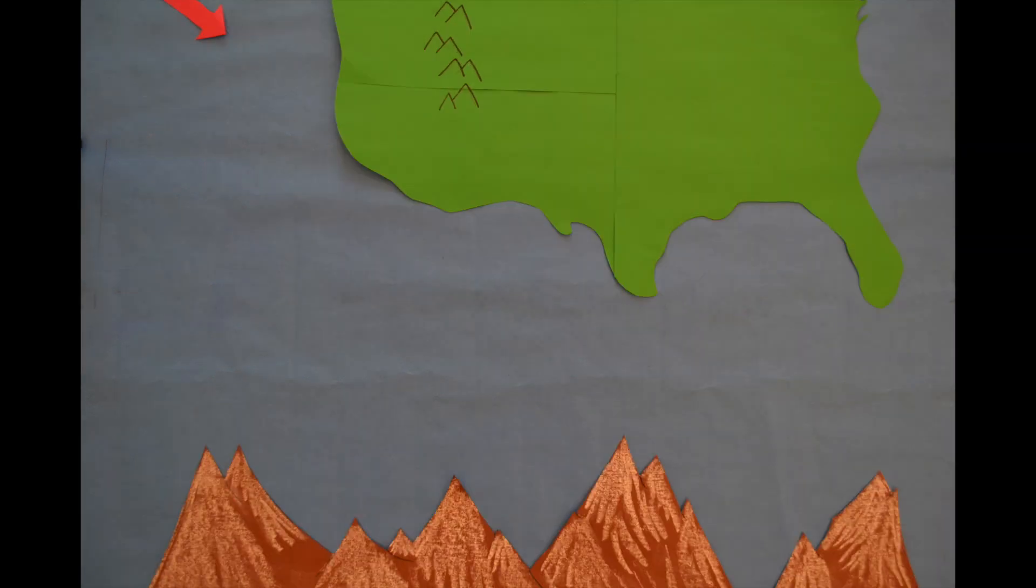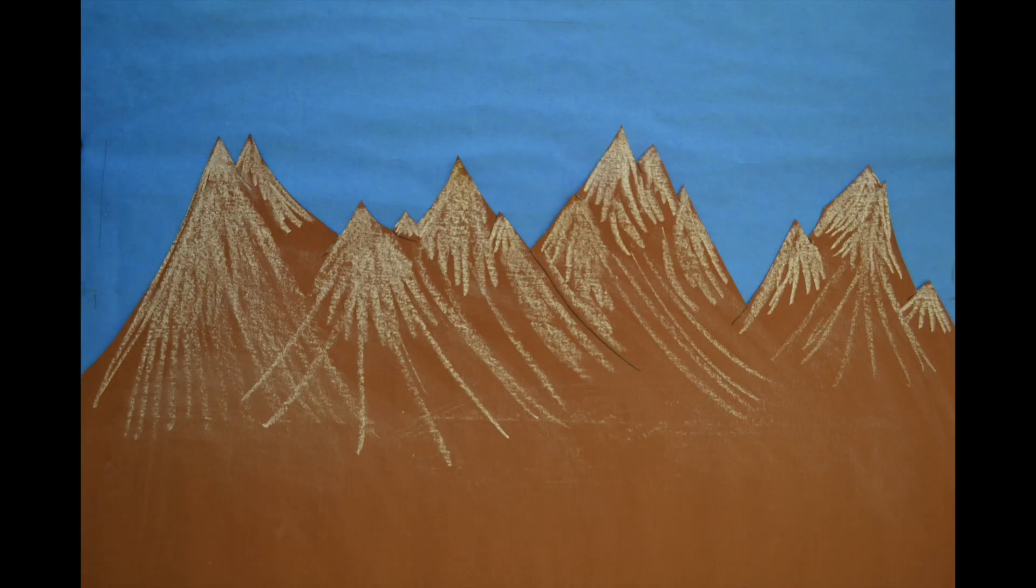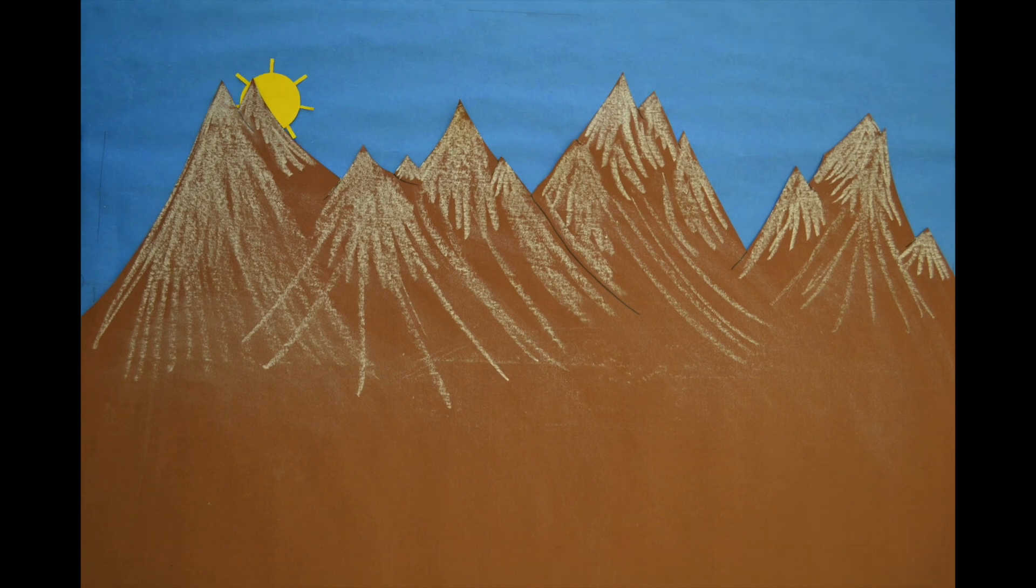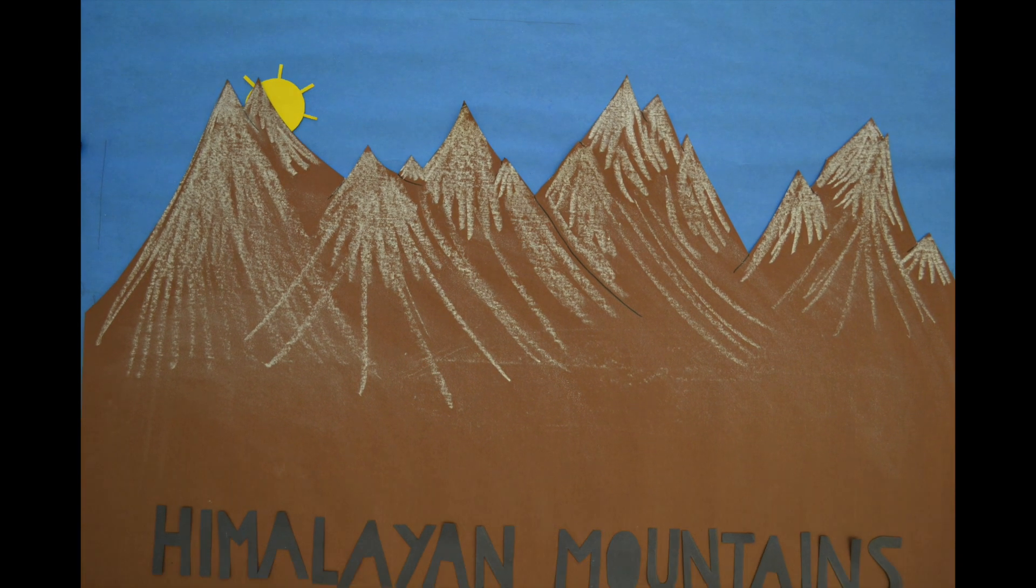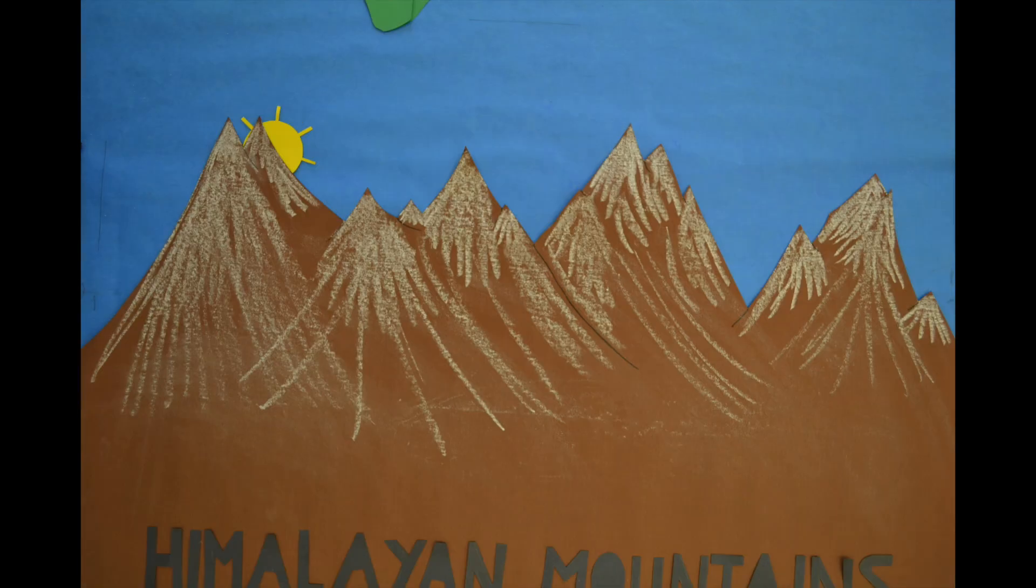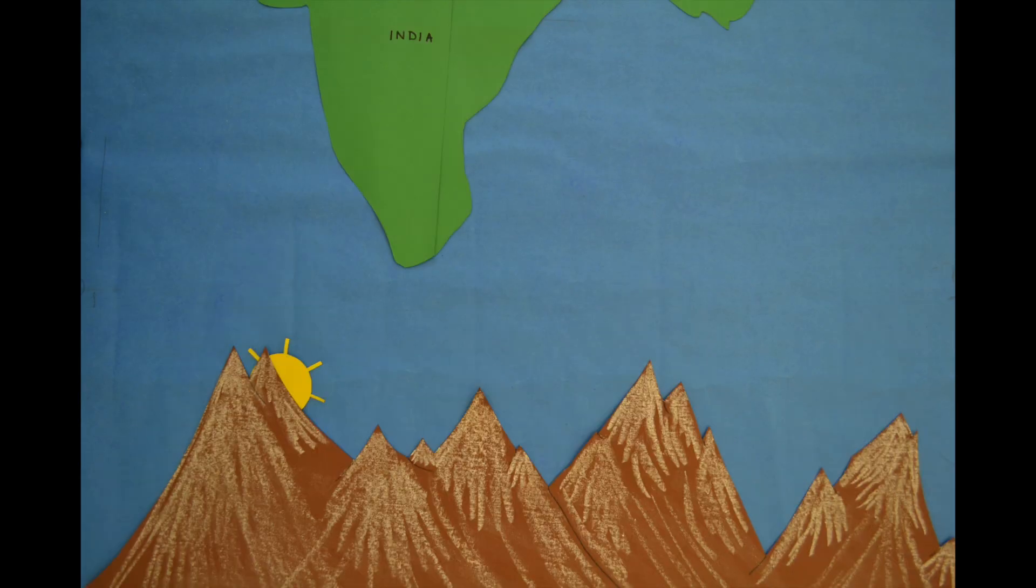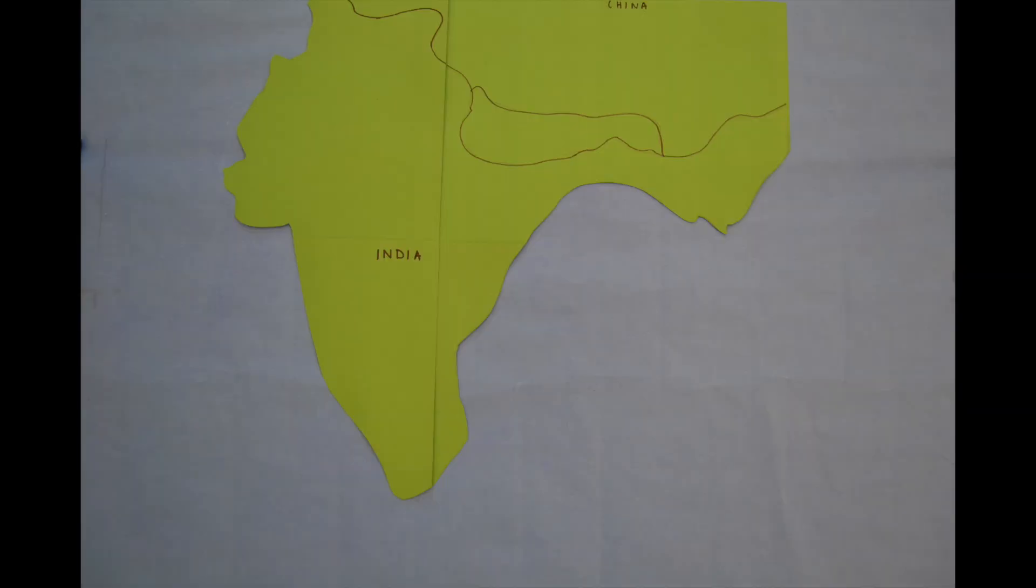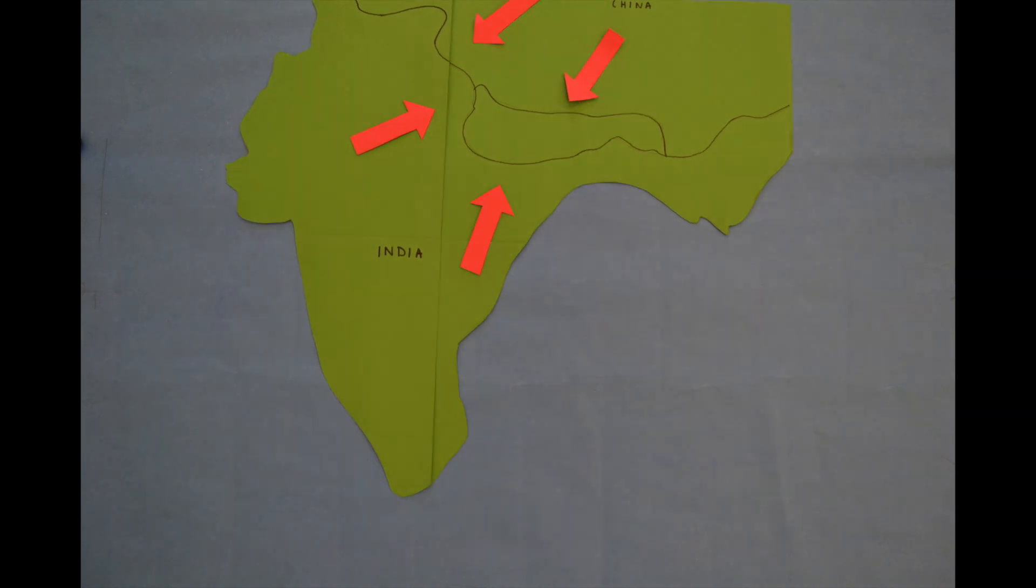However, events along an oceanic continental plate boundary are not the only way mountains can be formed. Similar events can also occur along continental continental plate boundaries. The Himalayan mountains are a great example of this. These mountains were formed because two continental plates crashed into one another along a convergent plate boundary.